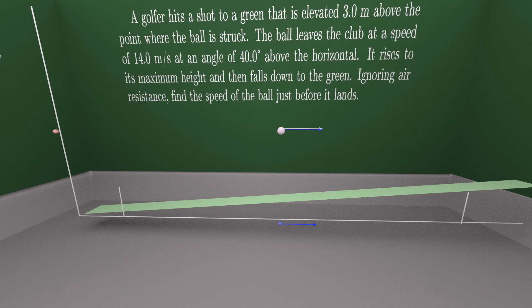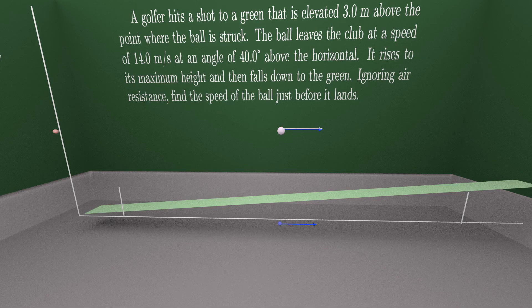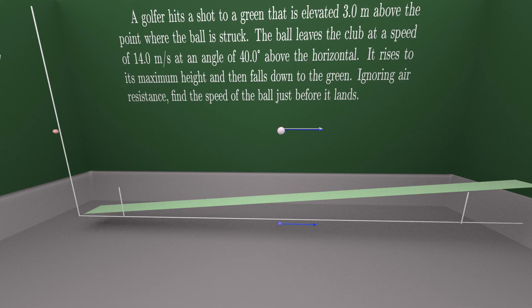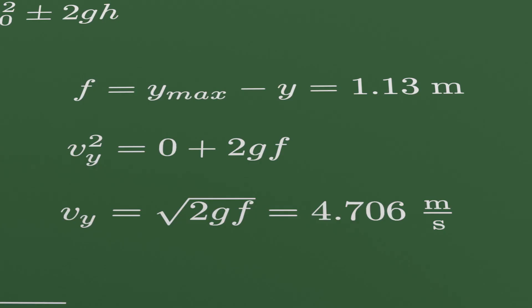We can find maximum height of the projectile if we take that in this point, y-component of the velocity is actually zero. And eventually we will get that y-max is 4.13 meters. Now we are able to find the length of the path from here to here, and it is y-max minus 3 meters. Of course, it is 1.13 meters.